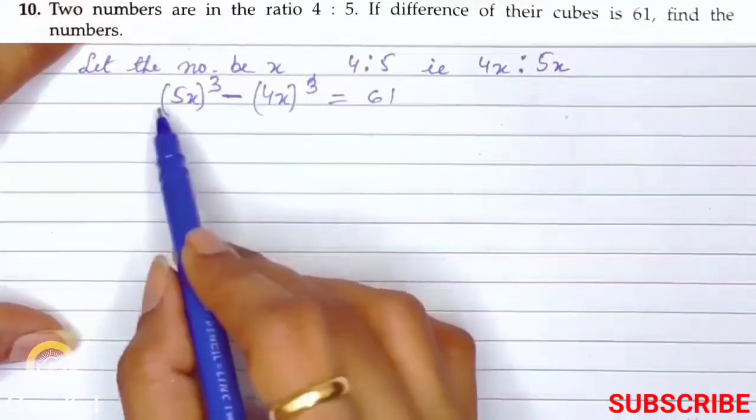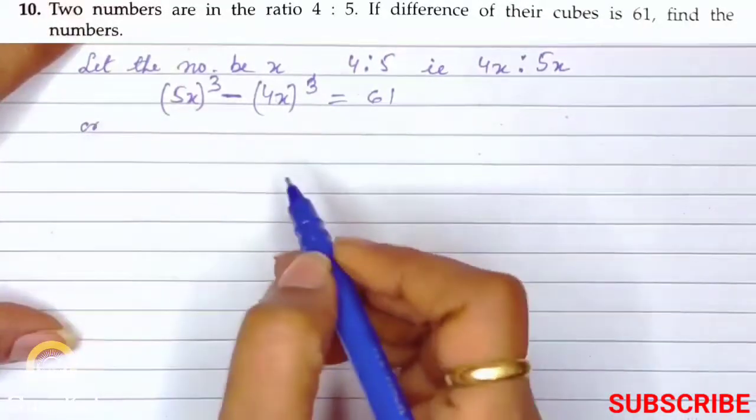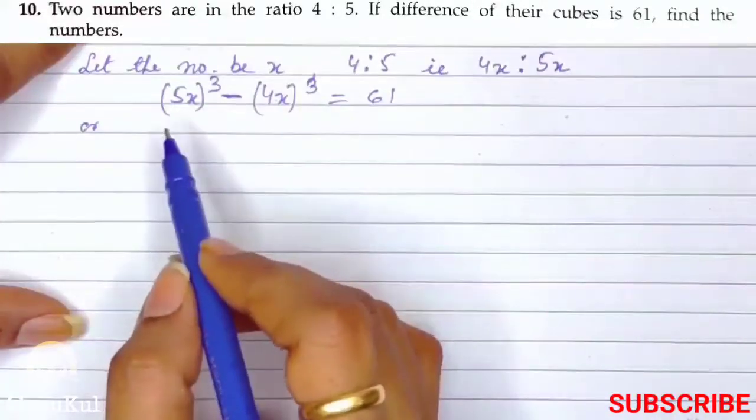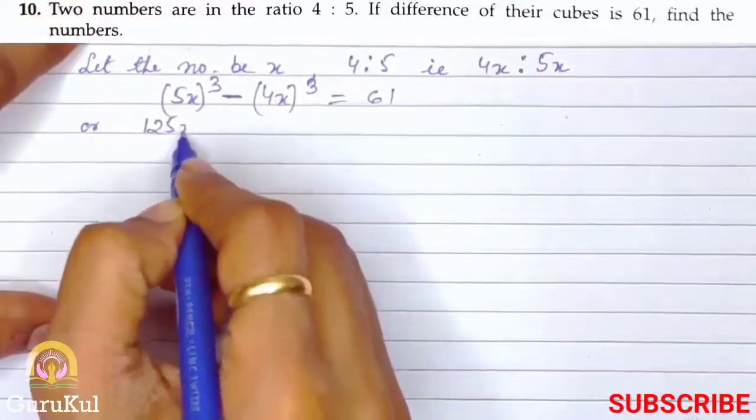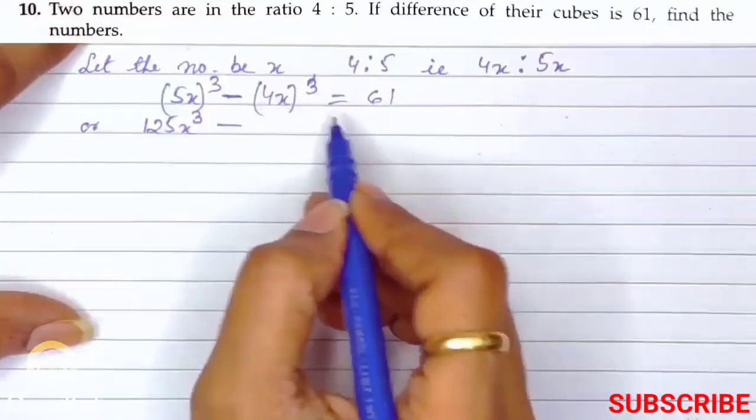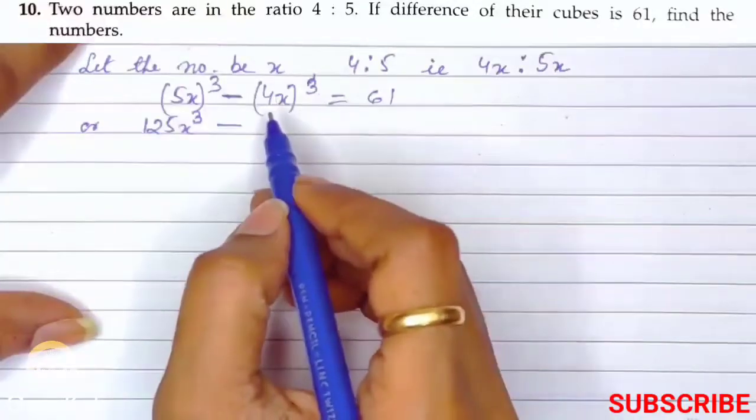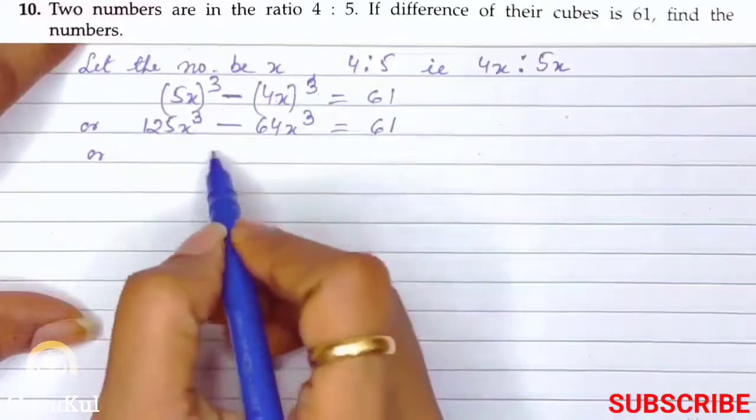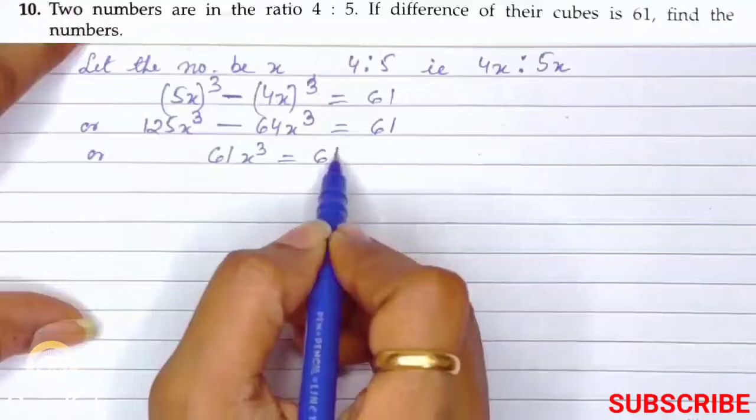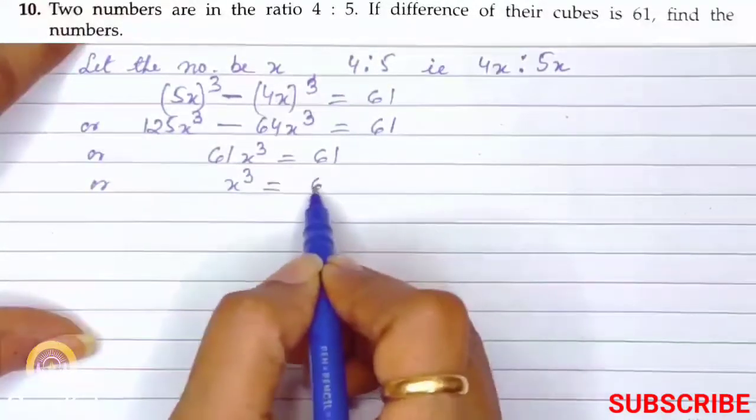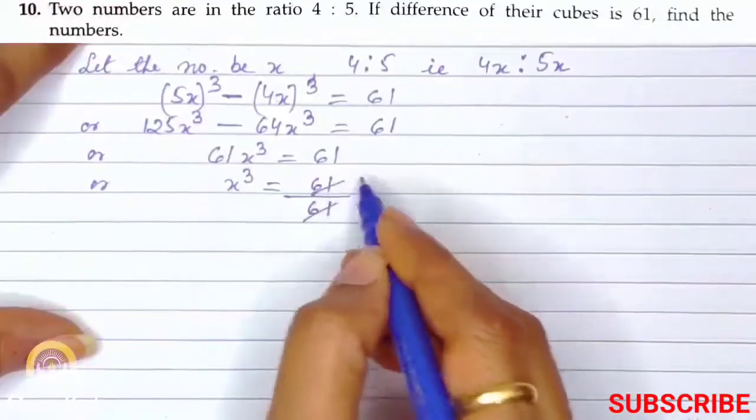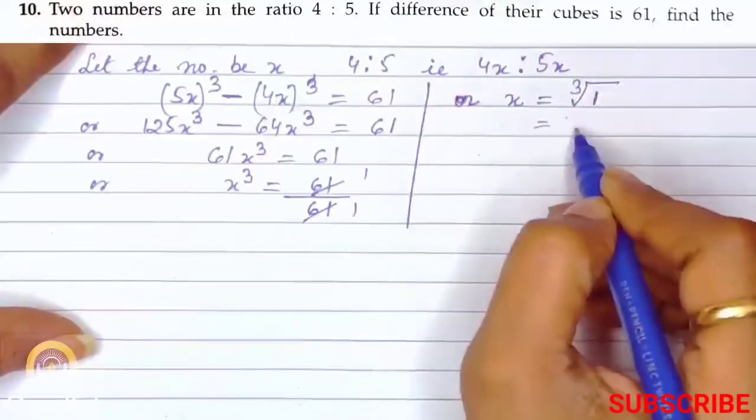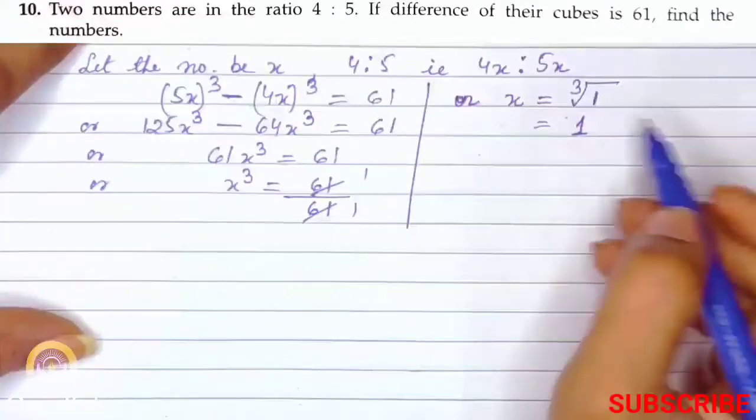5x to the power 3 means 5x × 5x × 5x. 5 × 5 is 25, 25 × 5 is 125x³. Minus 4x × 4x × 4x: 4 × 4 is 16, 16 × 4 is 64x³ equals 61. So 125x³ - 64x³ equals 61. 61x³ equals 61. x³ equals 61 divided by 61, which equals 1. Therefore x equals cube root of 1, so x is 1.